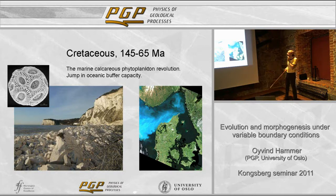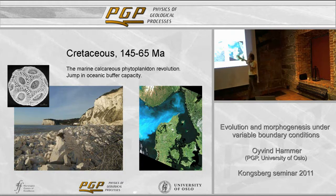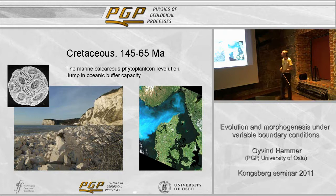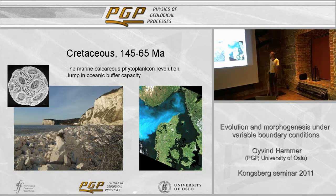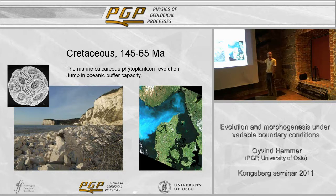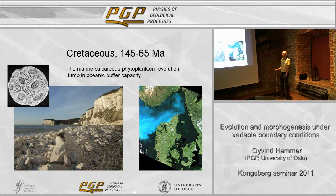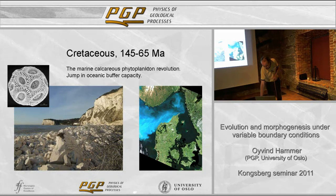Another big geological event was the calcareous phytoplankton revolution in the Cretaceous. The white cliffs of Dover and many carbonates around the world in the Cretaceous are formed - they are built by life. This is caused mainly by the evolution of a couple of groups of coccolithophorids, which are calcareous nannoplankton. Just to show the amazing scale of these algal blooms, a typical satellite picture of a coccolithophore algal bloom in the sea illustrates the incredible volumes of calcium carbonate produced in the ocean. You are starting to see that the geology of the Earth is controlled completely by life.